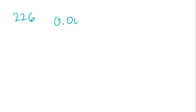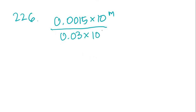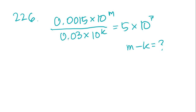Problem 226: if 0.0015 times 10 to the M, divided by 0.03 times 10 to the K, equals 5 times 10 to the 7th, then what is M minus K? There's a 3 and a 15, so dividing should give us a 5. We'll try to make the left side match the right side and figure out what M and K are.